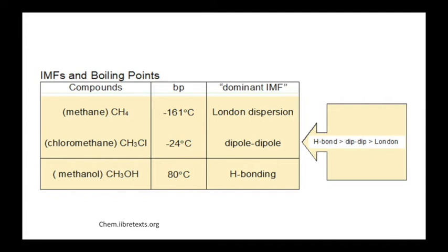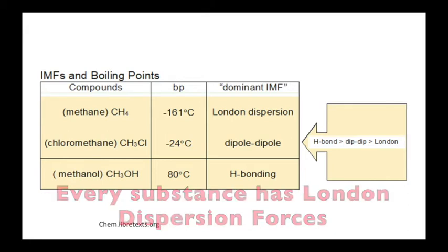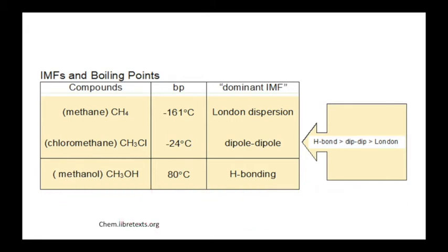For example, every substance has London dispersion forces. We can see that methane has the weakest intermolecular forces since it only has London dispersion forces. Its boiling point is very low — negative 161 degrees Celsius.